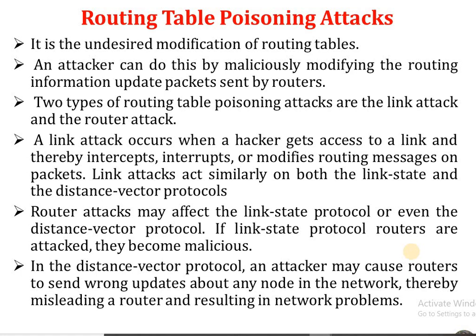The changed routing information is sent to neighboring nodes. There are two types of routing table poisoning attacks: link attacks and router attacks. A link attack occurs when a hacker gains access to the link and intercepts, interrupts, or modifies messages in the packets. Link attacks act similarly in both link-state and distance-vector protocols, interrupting and modifying information before forwarding.